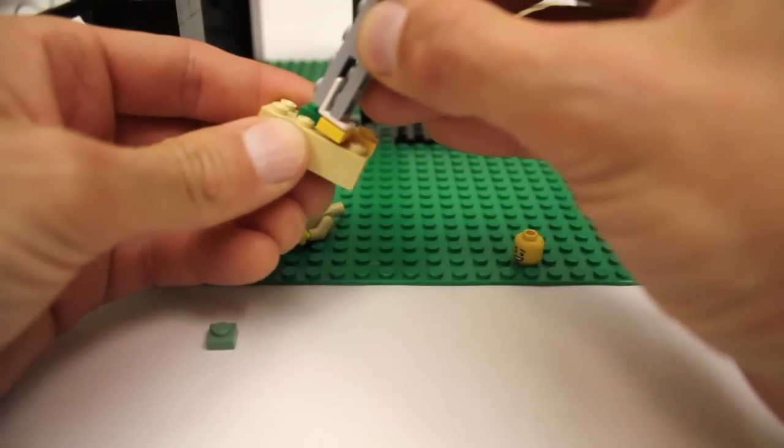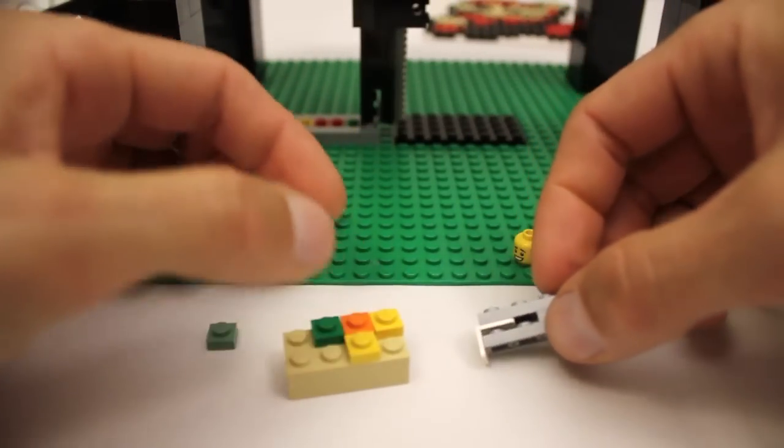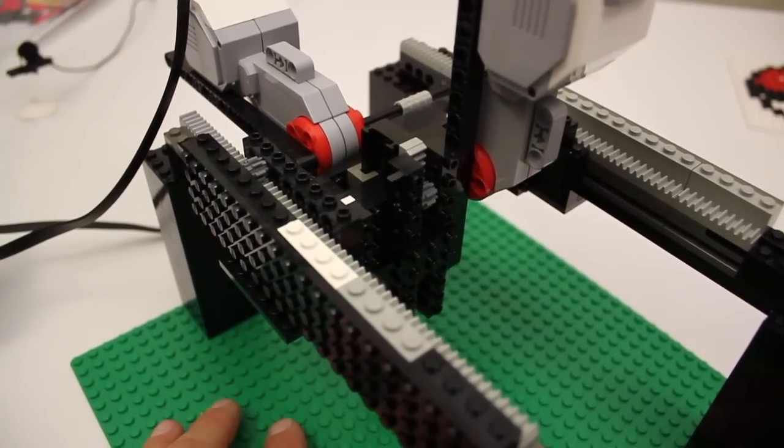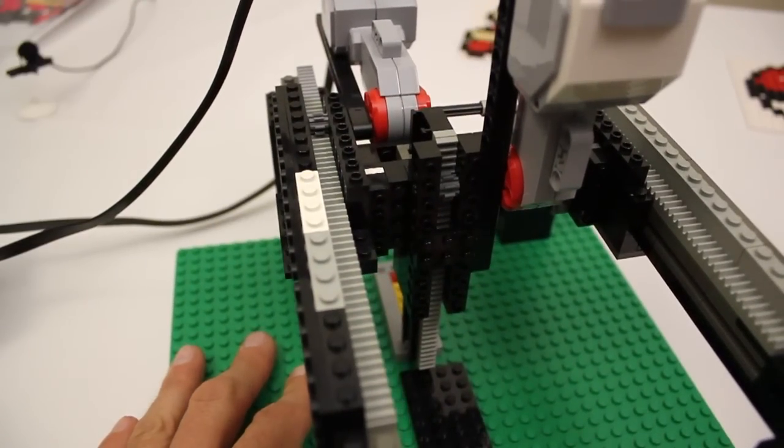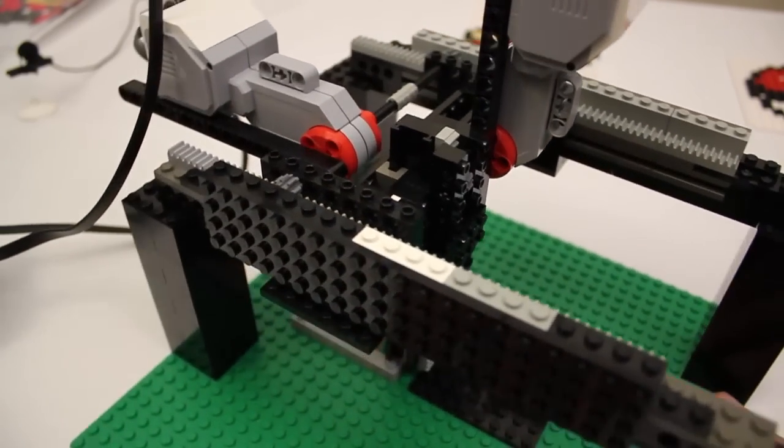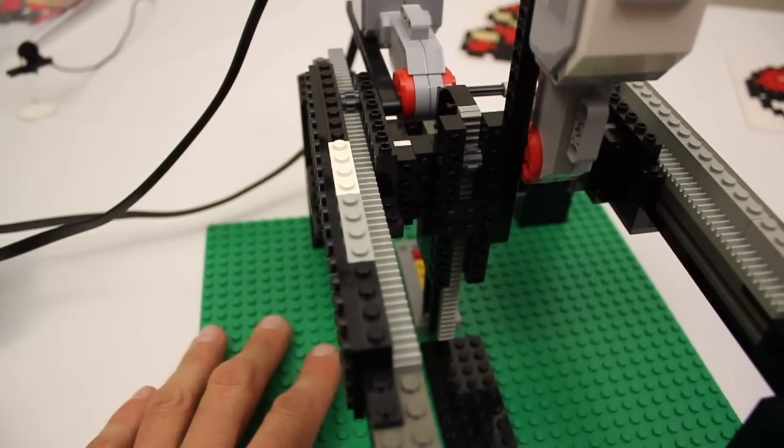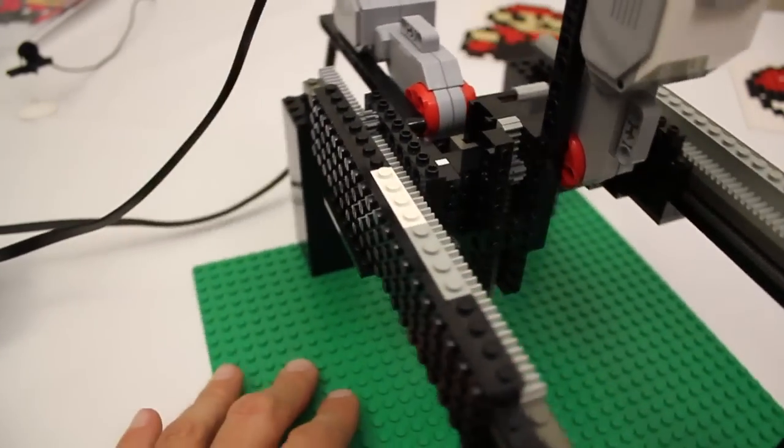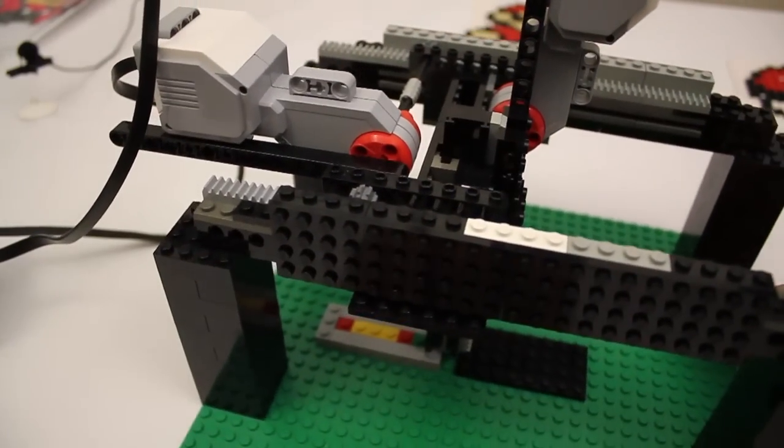What I have going on here are two sets of gear racks driven by these Mindstorms motors. There's one vertical one which moves the part up and down, and then there's a set of horizontal ones which are used to move the part forwards and backwards.